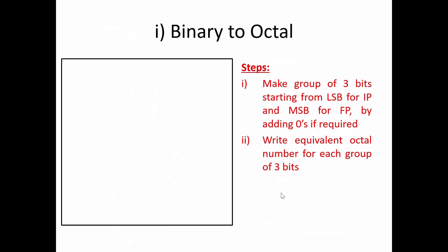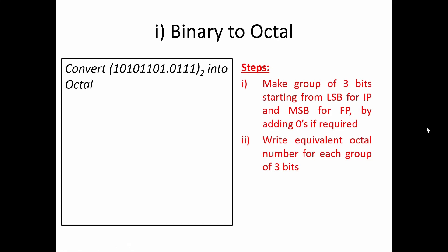For binary to octal: binary has radix 2 and octal has radix 8. Since 8 = 2³, the power 3 represents the number of bits used in grouping. The algorithm: make a group of 3 bits starting from LSB for the integer part and from MSB for the fractional part, adding zeros if required.